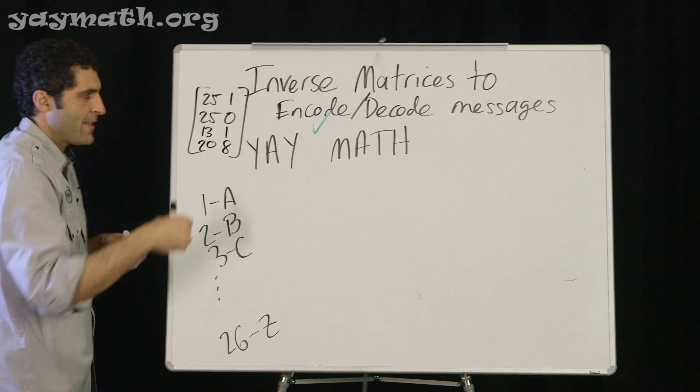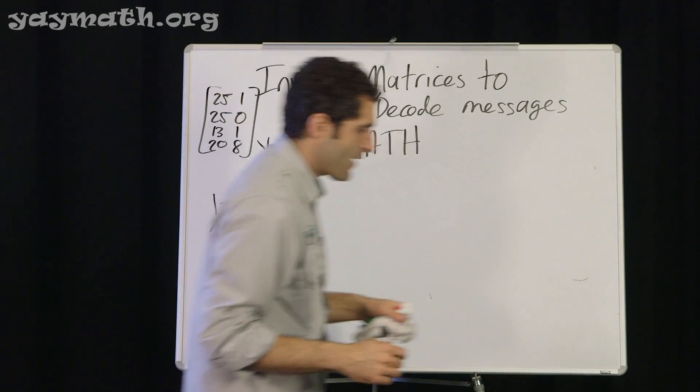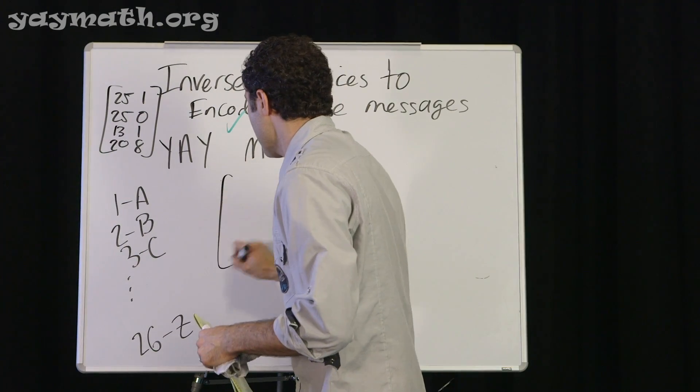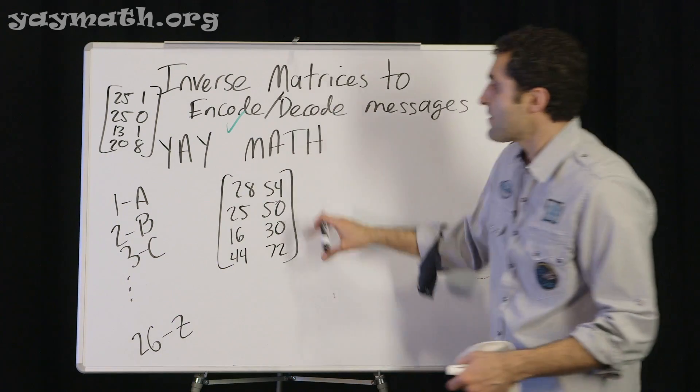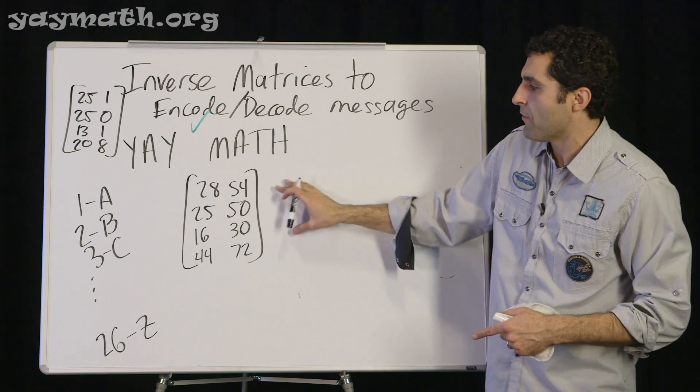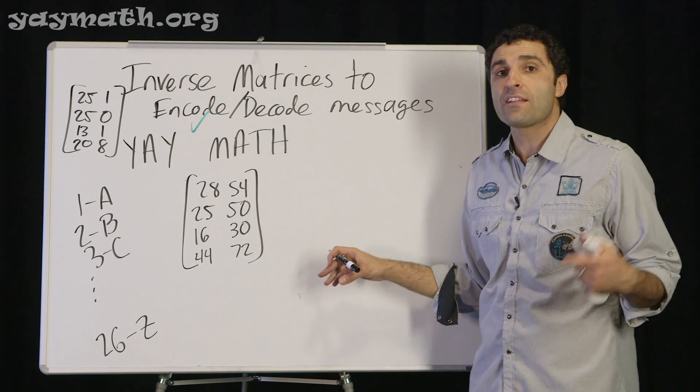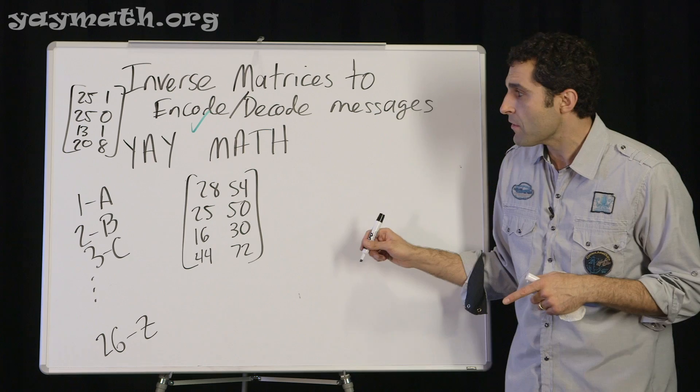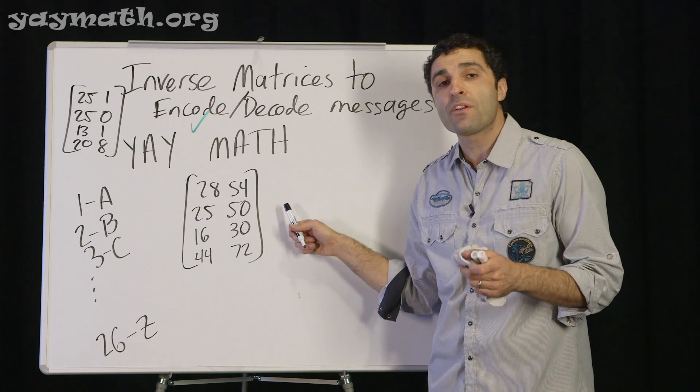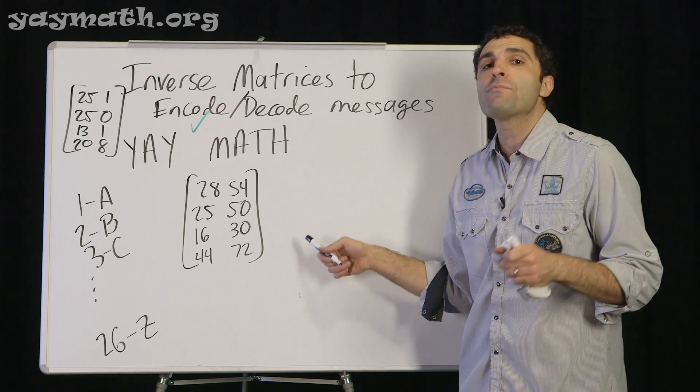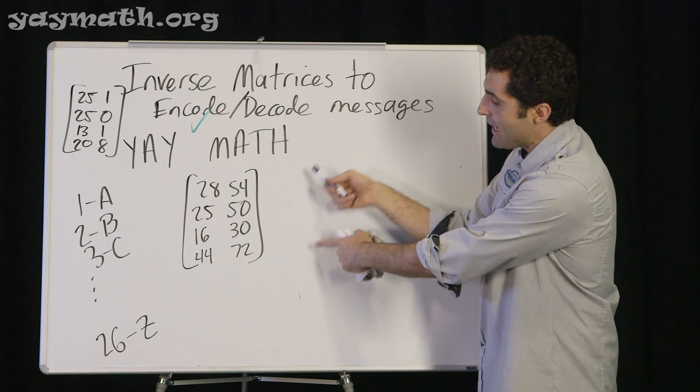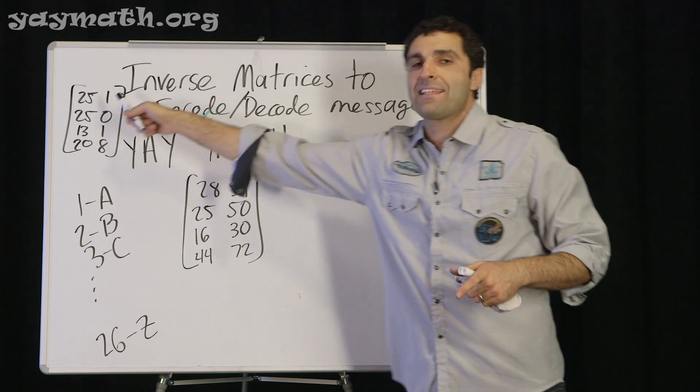So this is what the yaymath message is, given numbers. And then we calculated our encoded message. This is our encoded message. We're going to turn it back to our yaymath so that if I sent this to you with the encoding matrix of the 1, 2, 3, 4, you'd be able to get this back. But in order to do so, we can't just multiply by the encoding matrix 1, 2, 3, 4. We have to multiply by the inverse of 1, 2, 3, 4. That way, once we multiply by the inverse of 1, 2, 3, 4, we'll get back to this.